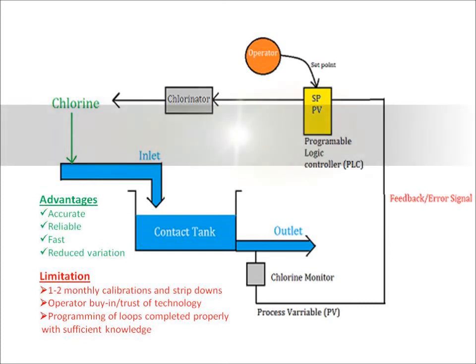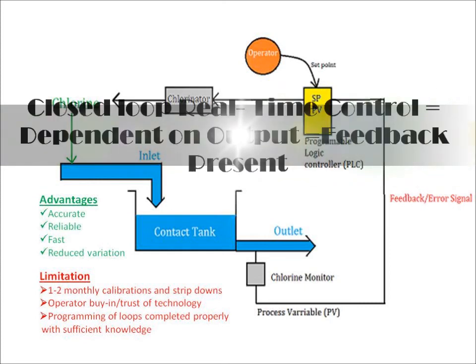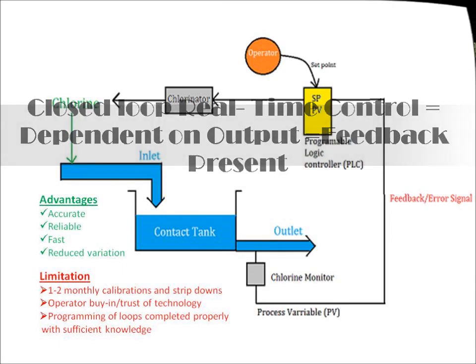The controller compares the process variable and set point to decide the suitable output to send to the chlorinators. This in turn alters or maintains the amount of chlorine added to the inlet of the contact tank. This represents a closed loop system, which provides accurate, reliable control with reduced effects of parameter variation, with no manual intervention required.